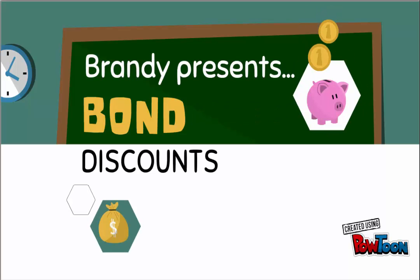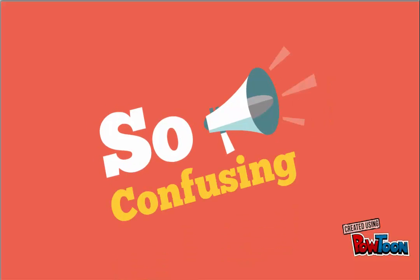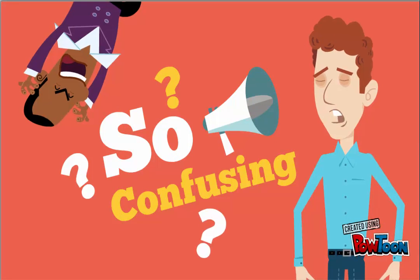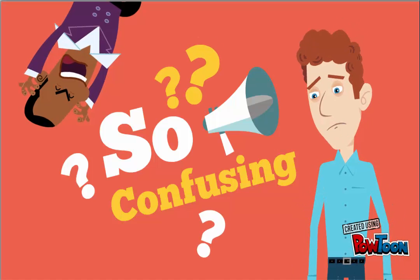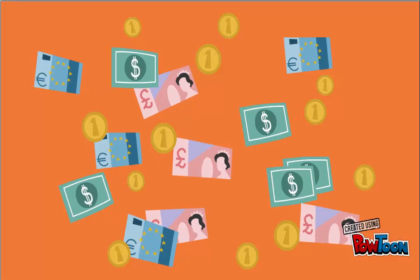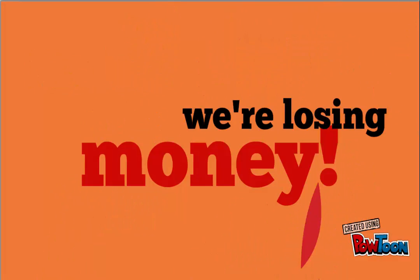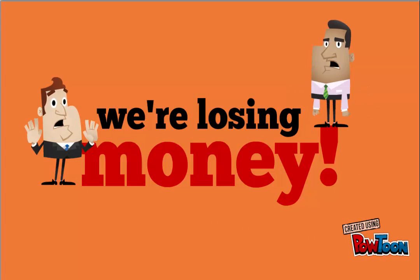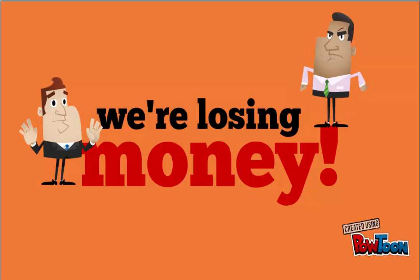Hi everyone, today we're talking about bond discounts and I'm your instructor Brandy. A bond discount occurs when a company or government issues a bond for less than the face value. A lot of times students find this very confusing — why would a company issue a bond for less money than it's going to pay out? That's what we're going to look at today.